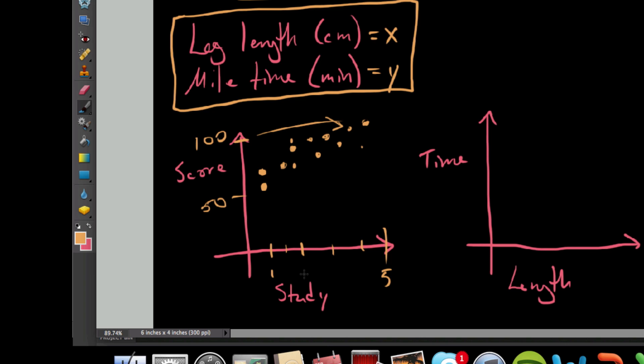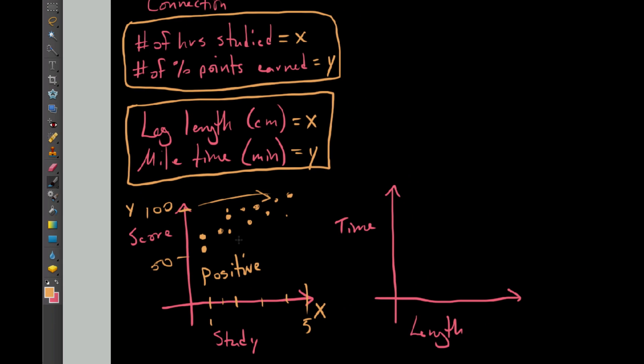But what you see is this. As the number of hours studied increases, or as X increases, if Y also tends to increase, we're going to refer to this as a positive correlation. So, in other words, as X goes up, if Y also tends to increase over X, then we say it's a positive correlation.